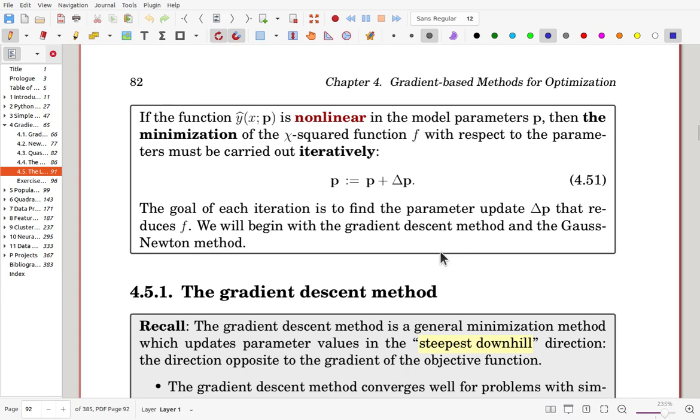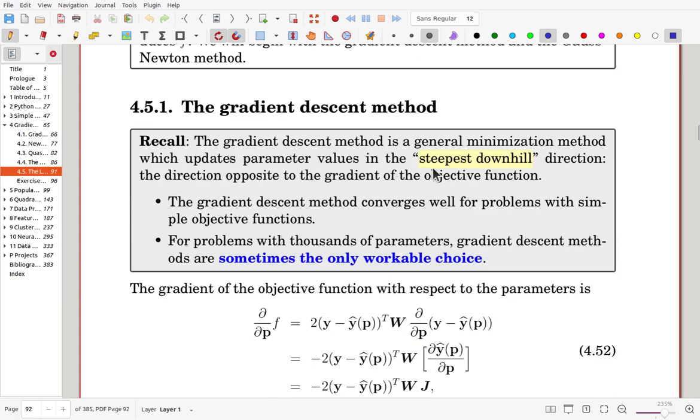Let's begin with the gradient descent method. As usual, the method is using the steepest downhill direction, which is negative gradient. The gradient descent method converges well for relatively simple problems and for also large problems having thousands of parameters. Sometimes the gradient descent method is the only workable choice. For Newton's method or variants of Newton's method, it can be very more expensive.